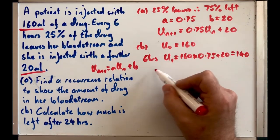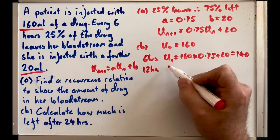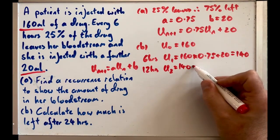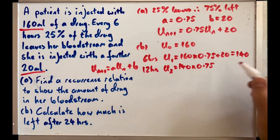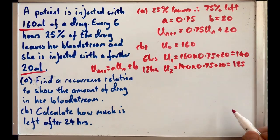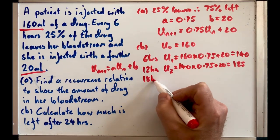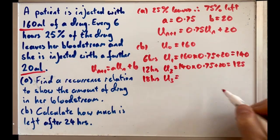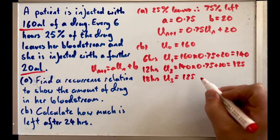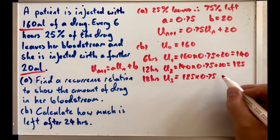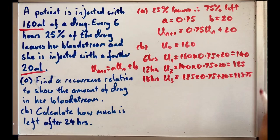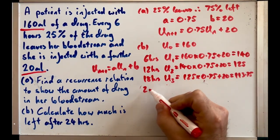So after 12 hours, that's the next time we go through this iteration, this formula, we're going to have 140 times 0.75 plus 20 and if I work that out it gives me 125 milliliters. So nearly there, after 18 hours that's going to be U₃. We've got 125 times 0.75 plus 20 which gives me 113.75.